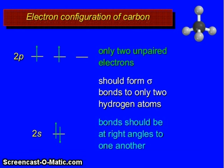Electronic configurations of carbon: 2s has 2 electrons, 2p has 2 electrons. Only two unpaired electrons should form sigma bonds to only two hydrogen atoms. Bonds should be at right angles to one another.